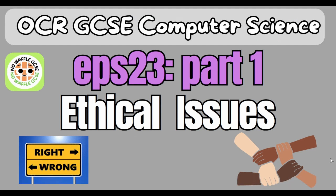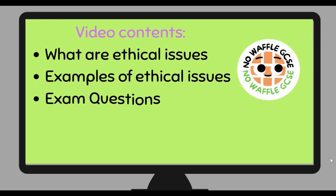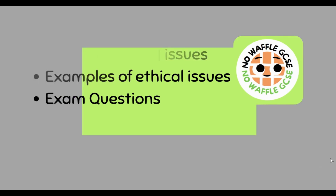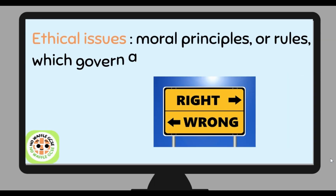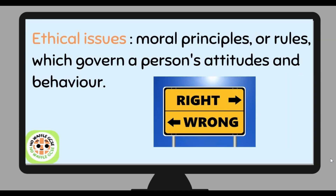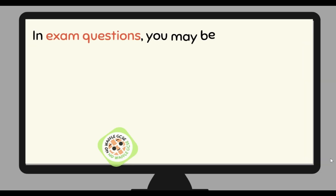OCR GCSE Computer Science, episode 23, part 1: Ethical Issues. In this video we are going to be looking at what ethical issues are, some examples, and then finally some exam questions. Ethical issues are moral principles or rules which govern a person's attitudes and behaviors — basically looking at what is right and what is wrong.